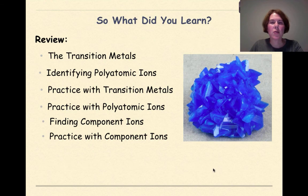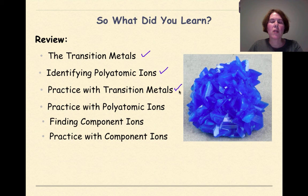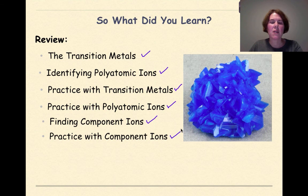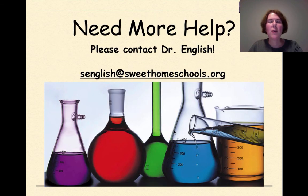So what did we learn in this tutorial? We reviewed what a transition metal is and where it's located, looked at polyatomic ions on Table E, practiced writing formulas with transition metals and polyatomic ions, talked about how to find component ions, and did practice with component ions at the end. Need more help? Feel free to contact me. Have a great day.